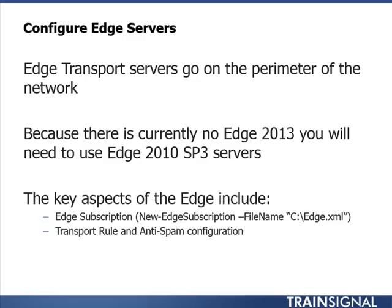On the edge transport server, the anti-spam agents are automatically installed and you automatically have the ability to manage them through the Exchange Management Console. So you make changes to rules, perhaps some configuration changes, and you think the edge transport server is working just fine. The other thing to consider when it comes to the edge transport service is cloning — sometimes you want to make a duplicate of your edge transport server.